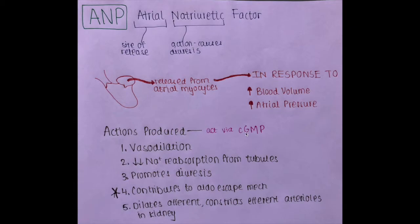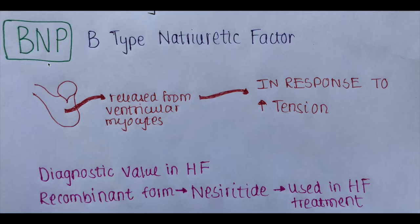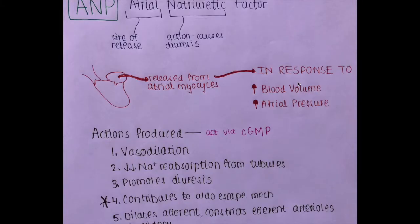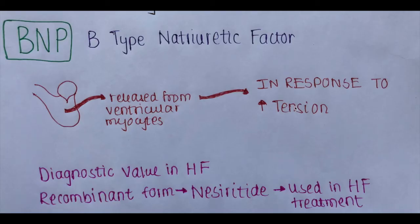ANF acts via cyclic GMP. BNP — B-type or brain-type natriuretic peptide — is released from ventricular myocytes in response to increased tension. Remember: BNP is released in response to increased tension, whereas ANP is released in response to increased blood volume and atrial pressure. Increased tension in the ventricles causes release of BNP, which has similar physiological actions to ANP, tending to reduce pressure and volume.